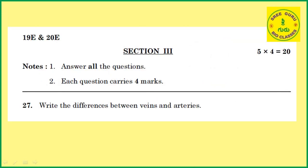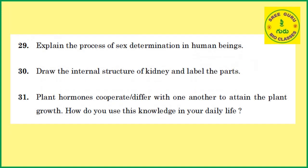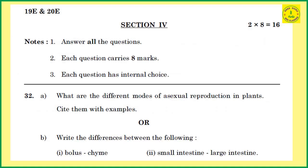Section 3 has 4-mark questions. Five into four equals 20 marks. Answer all the questions. Each question carries four marks. Example questions include: write the difference between veins and arteries, explain the process of sex determination in human beings, or draw the internal structure of the kidney and label the parts.